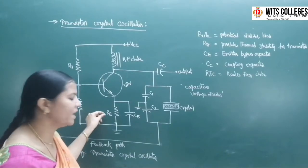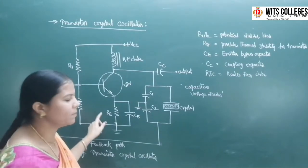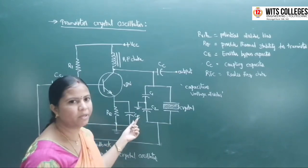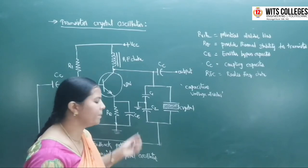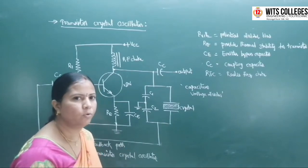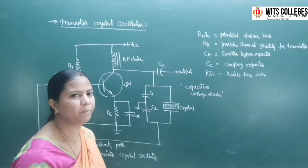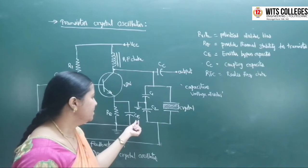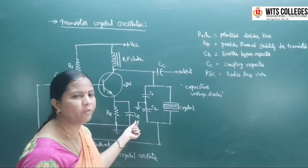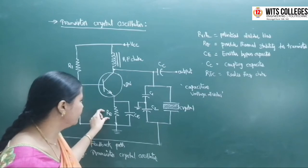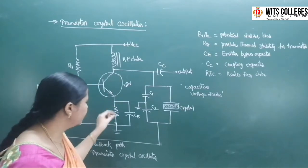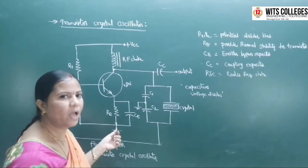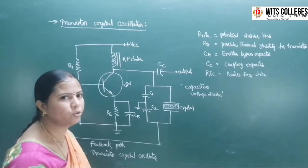R1 and R2 provide potential divider bias and the emitter resistor RE. The emitter resistor RE is used to provide thermal stability for the NPN transistor. CE is the emitter bypass capacitor, used to bypass the amplified AC oscillations. If this emitter bypass capacitor is not used, the amplified oscillations will go through the emitter resistor RE to ground, and the gain of the oscillator will be reduced.